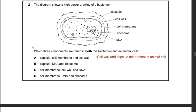Question 16: the diagram shows a high-power drawing of a bacterium. Which three components are found in both this bacterium and an animal cell? Answers A, B, and C are incorrect because capsule and cell wall are only present in the bacterium, not in an animal cell. The best answer is D — cell membrane, DNA, and ribosome are present in both bacterium and animal cell.